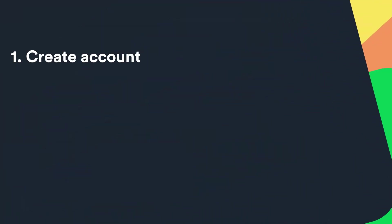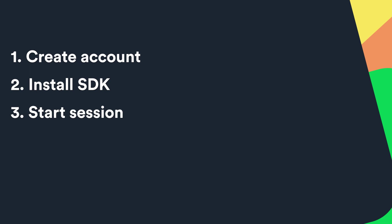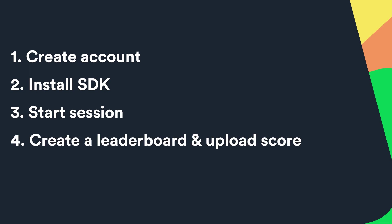We will implement the leaderboard in five steps. We will start by creating an account at the LootLocker website, then configure and install the SDK, then start a session, create a leaderboard and upload a score, and finally show the leaderboard. In addition, we will also make it possible for players to change their name — that's an optional step at the end if you're interested.